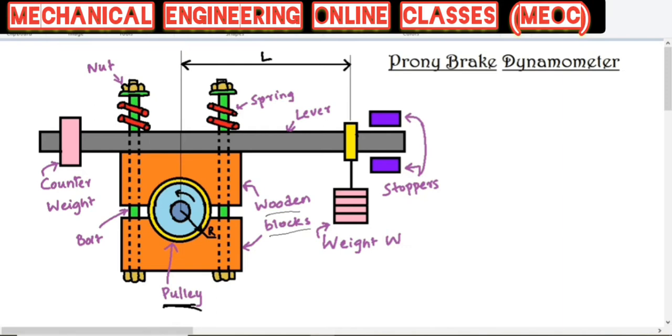The radius of the pulley is given by capital R. There is a lever shown in grey color, and at the end of the lever there is weight attached. These weights are adjustable, meaning you can add or remove weights. There are two helical springs shown in red color, which are provided to adjust the pressure on the pulley and to control its speed.